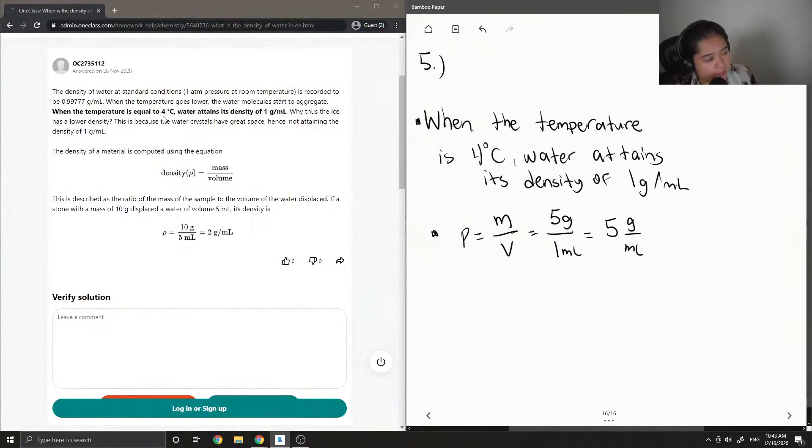This is because the water crystals have greater space, hence not attaining the density of one gram per milliliter.